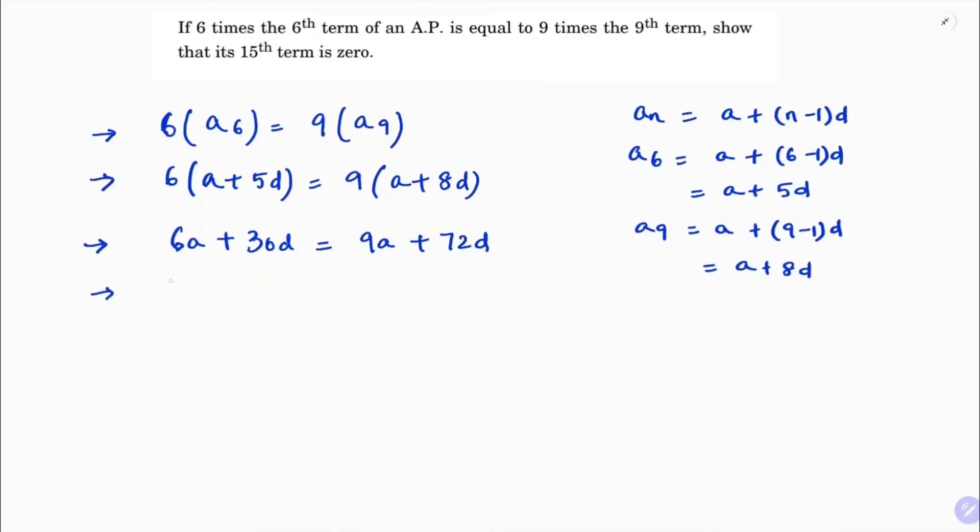So I'll bring all the terms to one side, so first I will write this part: 9A plus 72D minus 6A minus 30D equals 0. So 9 minus 6 is 3A, 72 minus 30D is 42D equals 0.